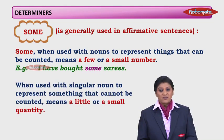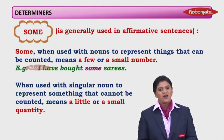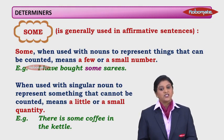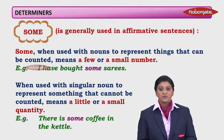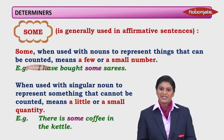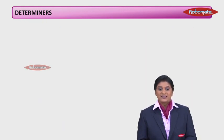But when 'some' is used with a singular noun to represent something that cannot be counted, it means a little or a small quantity. For example, 'there is some coffee in the kettle' — coffee cannot be counted, and thus 'some' represents a little or a small quantity of coffee in the kettle.